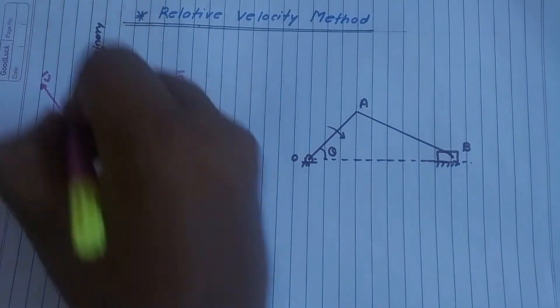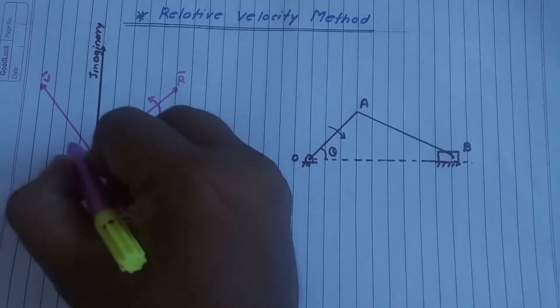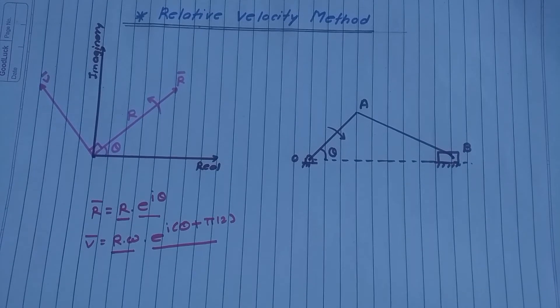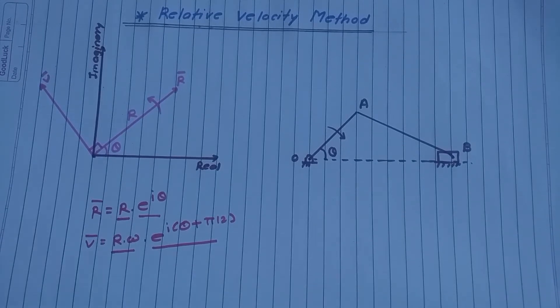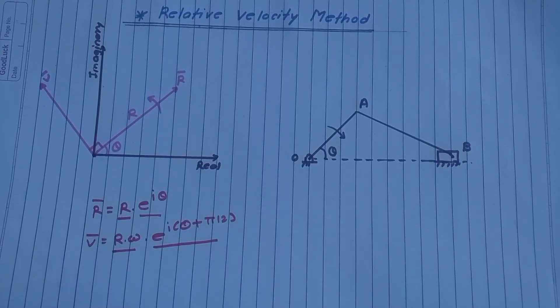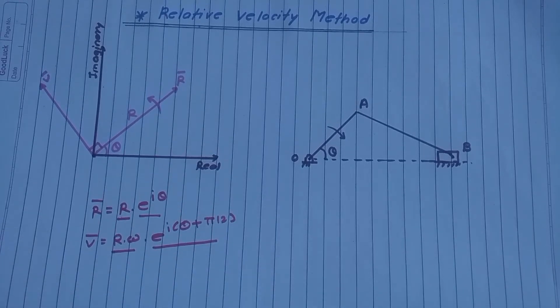So that is v bar, this is perpendicular. This is how we represent velocity vector with magnitude of r omega and direction of theta plus pi by 2, means perpendicular to the position of given vector.